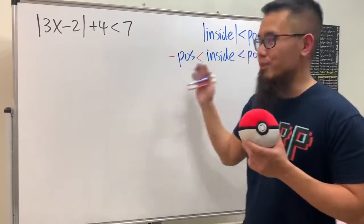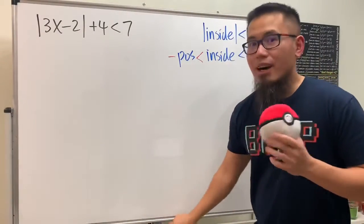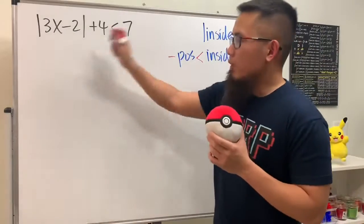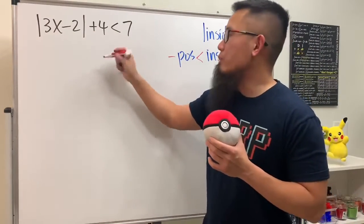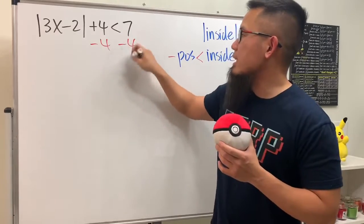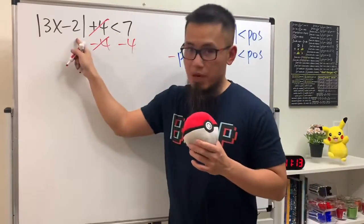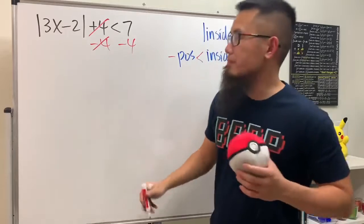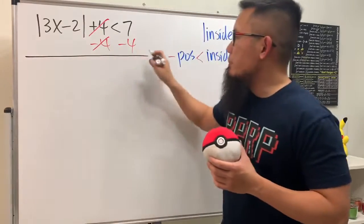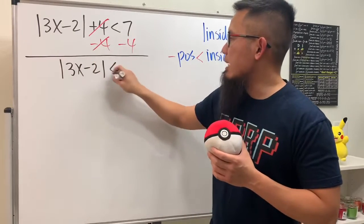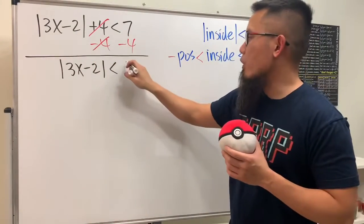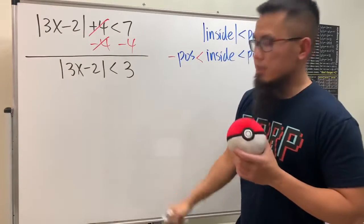Let me put this in action for you. First off, we have the plus four, so we must minus four on both sides because we have to isolate this part first before we can do anything else. With that being done, we will have the absolute value of 3x minus 2, and this is less than 7 minus 4, which equals 3.